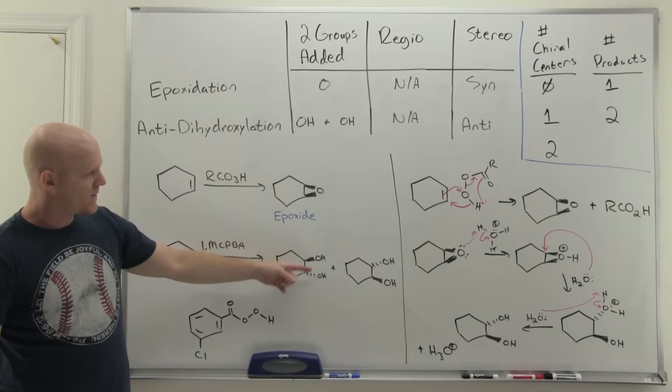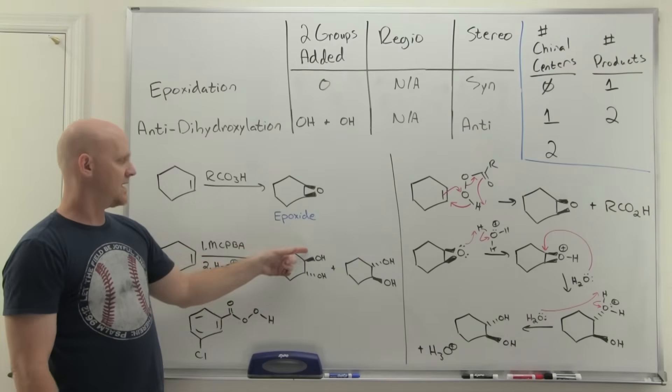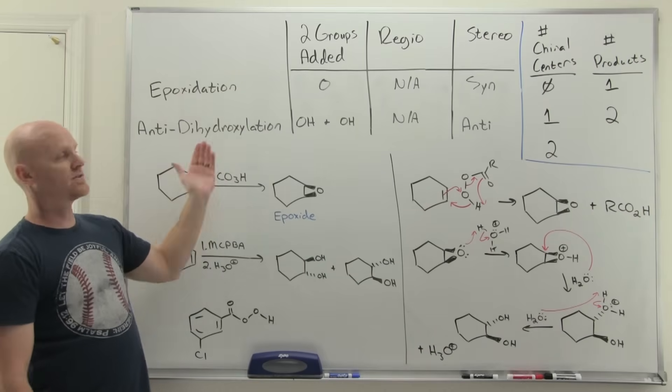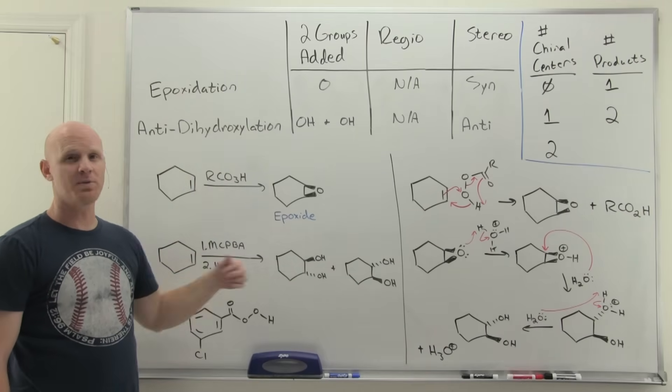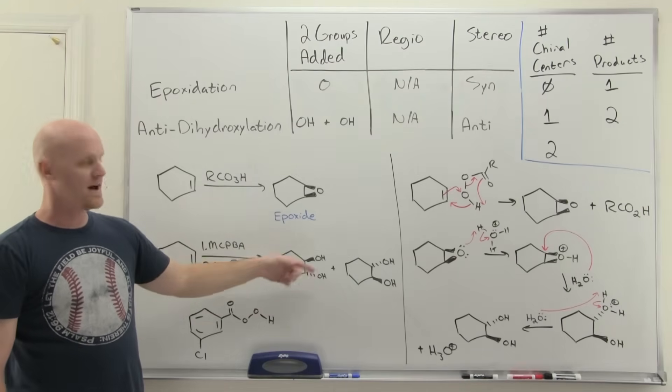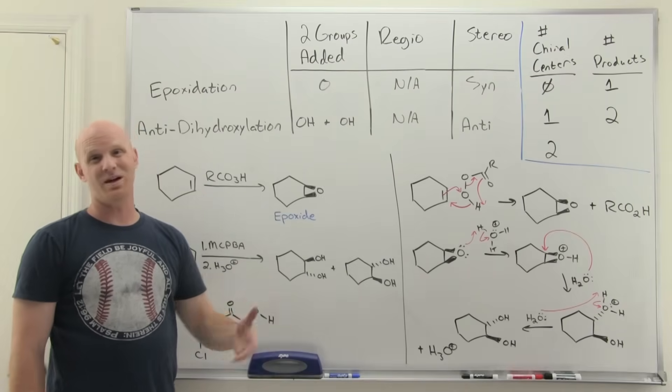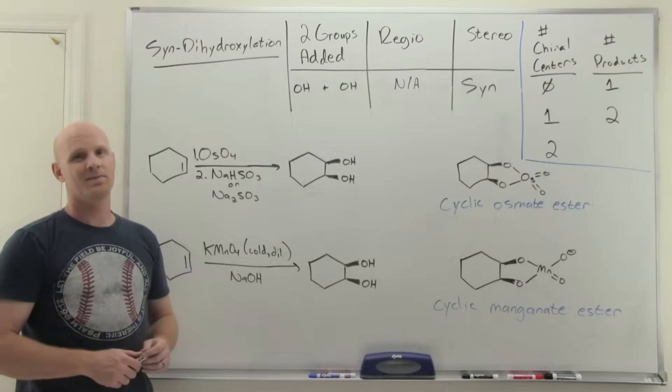When you've got these two OHs here, we call that dihydroxylation, adding two hydroxyl groups. In this case, we call it anti-dihydroxylation because they end up on opposite faces of the molecule. That's important because we're about to cover syn-dihydroxylation, where you end up adding two OHs and they end up cis to each other on a ring like this. They add to the same face rather than opposite.